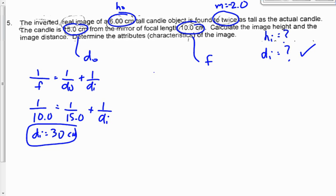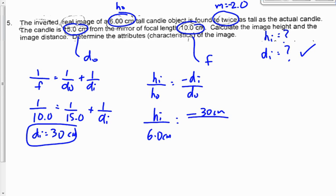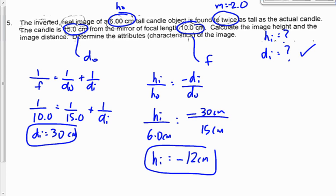Now let's find the image height using HI/HO = −DI/DO. So HI/6 = −(30)/15. That works out to negative 12 centimeters. We know we should get a negative number because the question told us it was an inverted image — so HI should be negative. That's exactly what we got. If we had gotten a positive value, we'd need to re-examine our work.